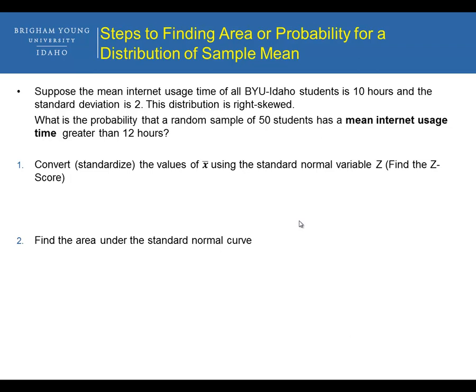Suppose the mean Internet usage time of all BYU-Idaho students is 10 hours with a standard deviation of 2, and this distribution is right skewed. What's the probability that a random sample of 50 students has a mean Internet usage time greater than 12 hours? Step one: convert the value of x-bar using the standard normal variable z — basically, find the z-score.